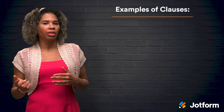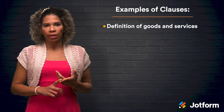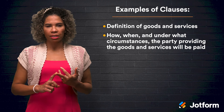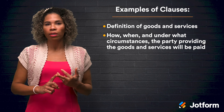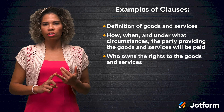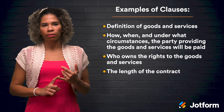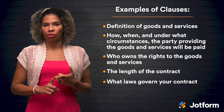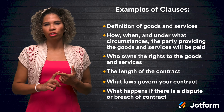But what do clauses look like? Some examples of what may be included as a clause are the goods and services that will be provided, details of how, when, and under what circumstances the party providing the goods and services will be compensated, who owns the rights to the goods and services being provided, the length or term of the contract, which federal or state laws govern your contract, and what might happen if there is a dispute or breach of contract.